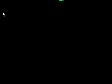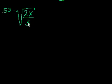Problem 155. A positive number x is multiplied by 2, and this product is then divided by 3. If the positive square root of the result of these two operations equals x, what is the value of x?